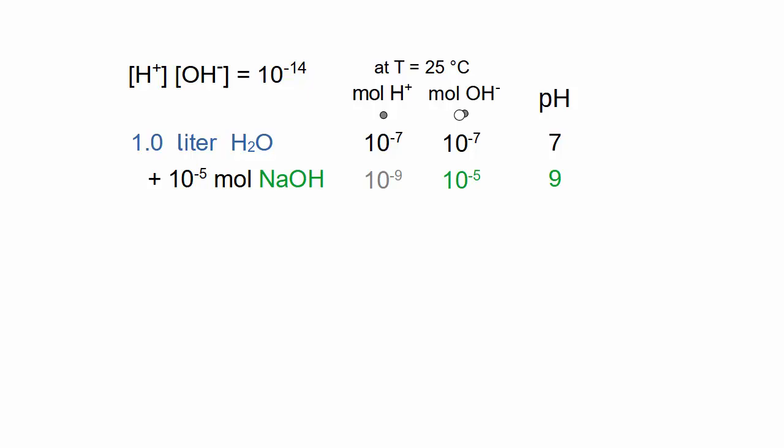Adding 10 to the minus 5 mole sodium hydroxide brings up the OH-minus concentration to 10 to the minus 5 and reduces the H-plus concentration to 10 to the minus 9.